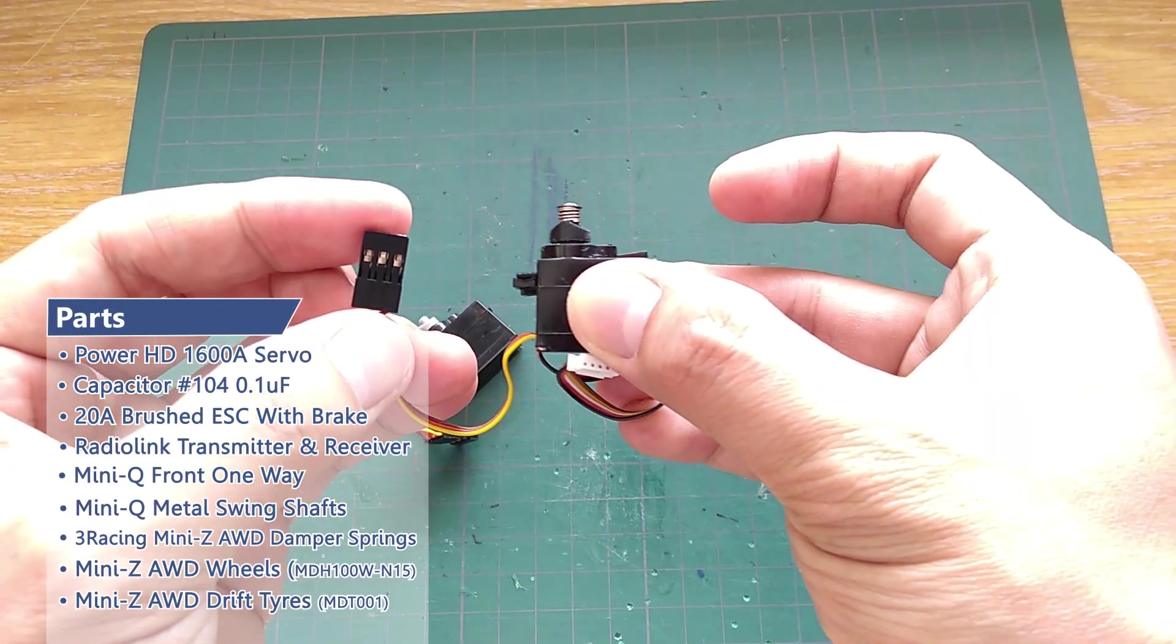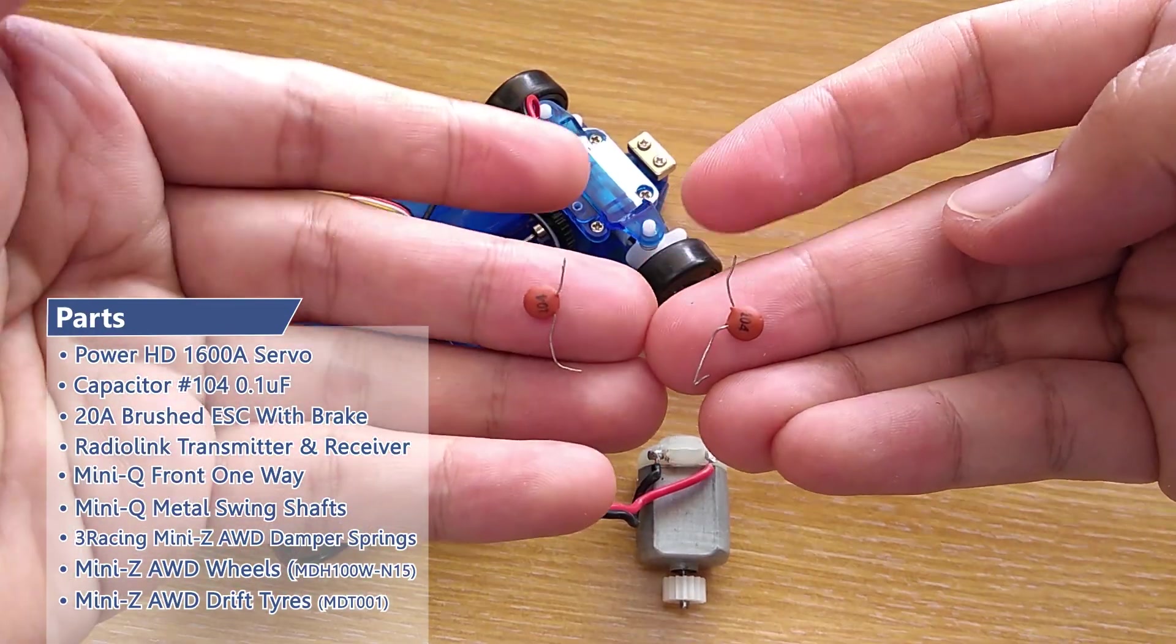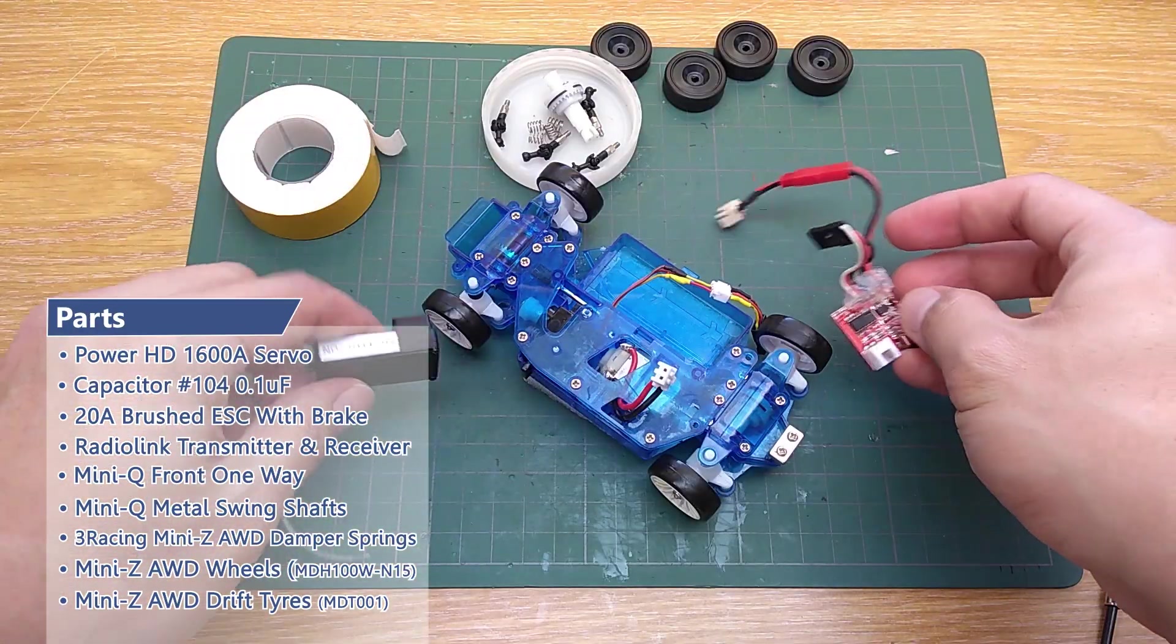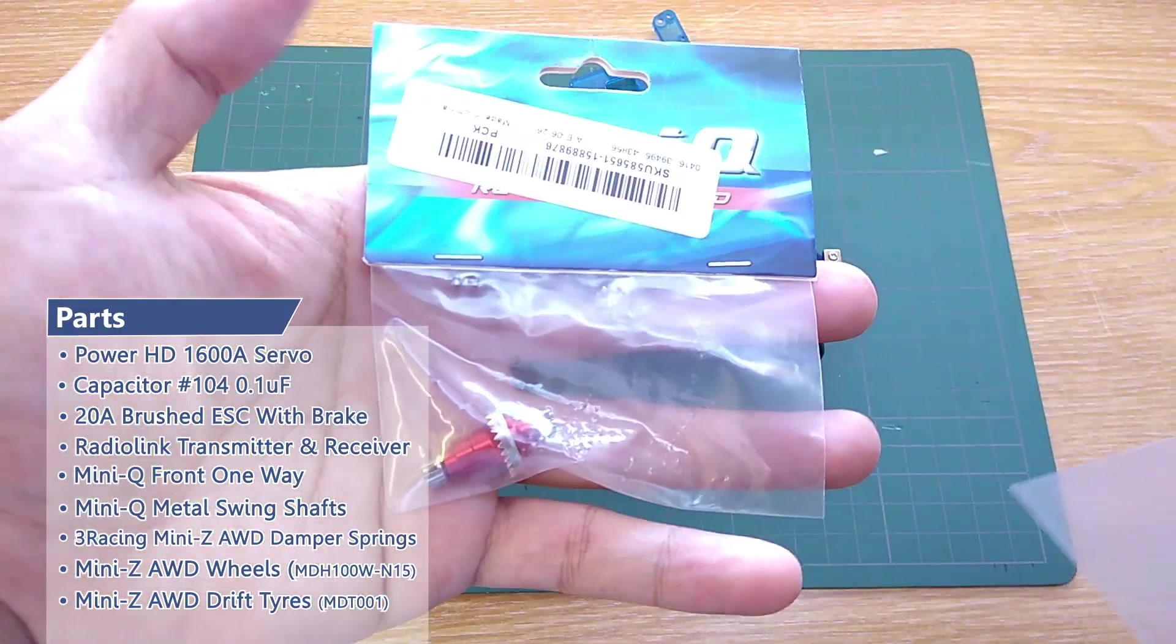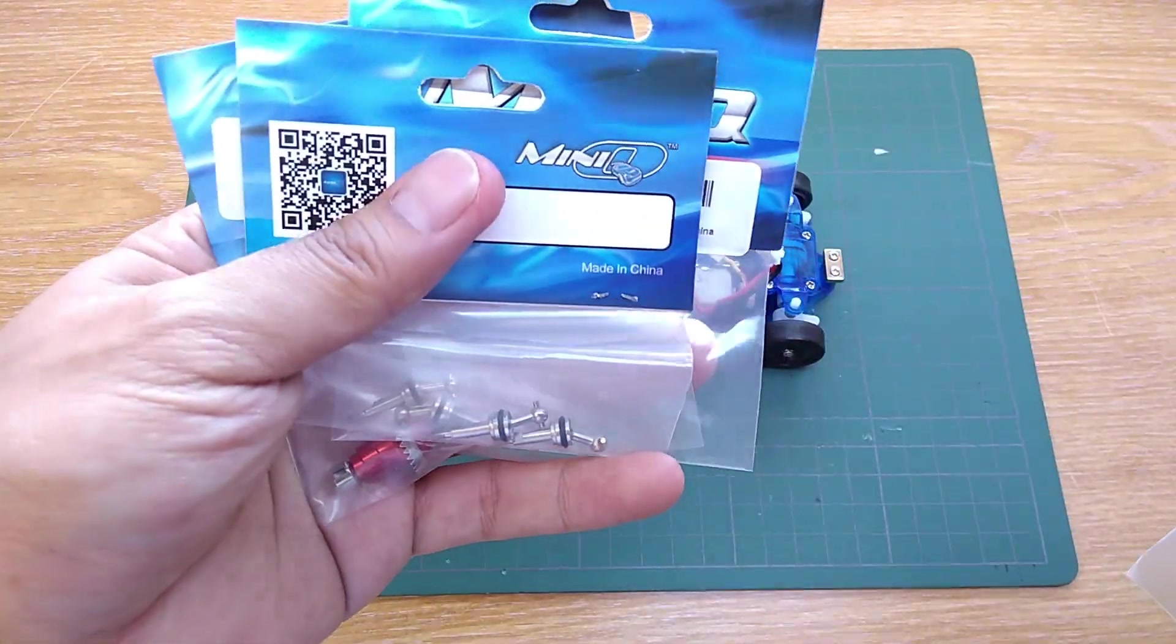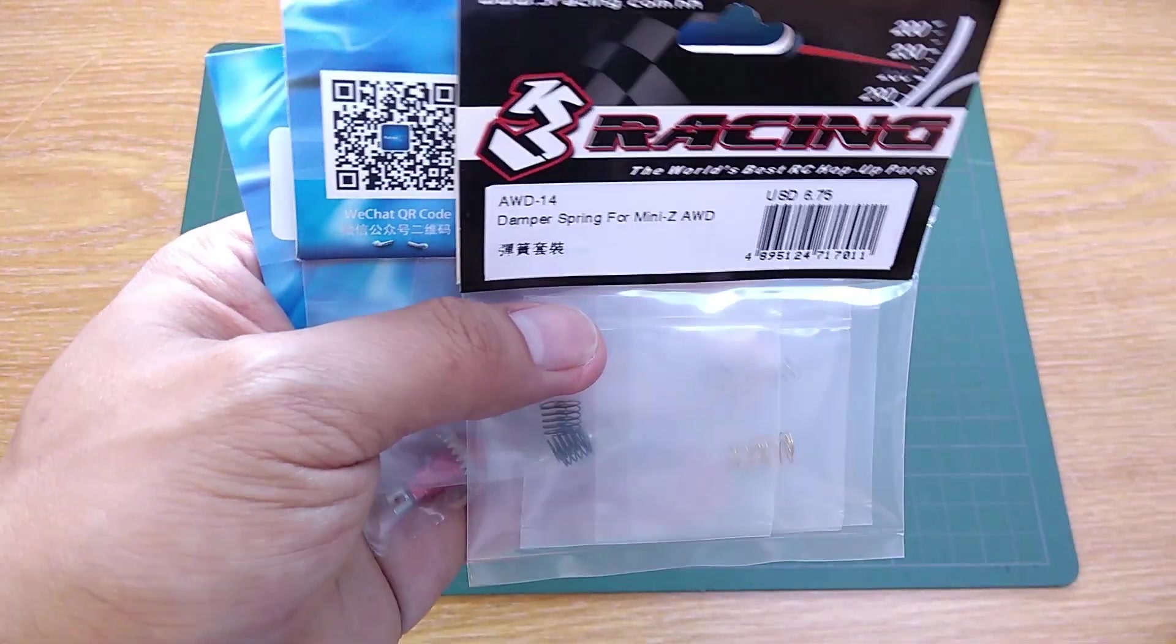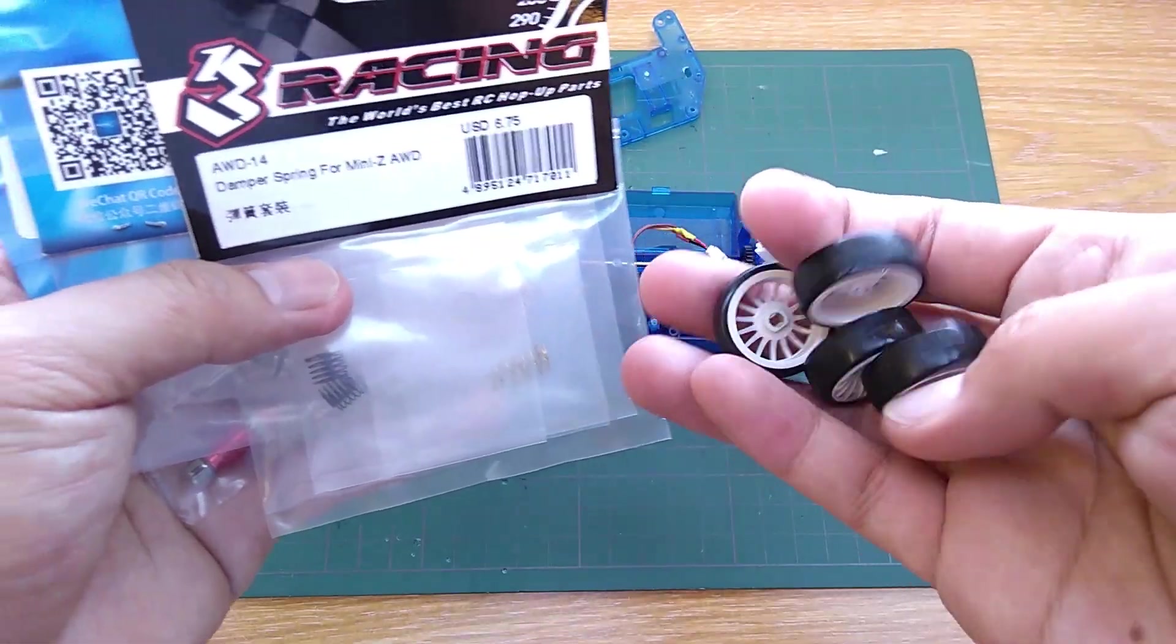A new servo, capacitors, new ESC, receiver, front one way, metal swing shafts, tuning springs. And to top everything off, let's put some good drift tires on it.